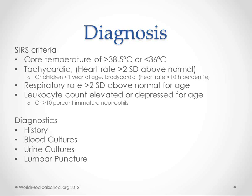The SIRS mnemonic: S for speed — heart rate; I for inflammation — leukocyte count; R for red hot — temperature; S again for speed — respiratory rate. We also want to figure out the underlying cause, so we do blood cultures, urine cultures, and lumbar puncture in case there is a septic cause, while simultaneously stabilizing the patient.